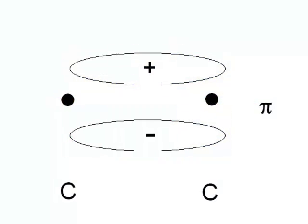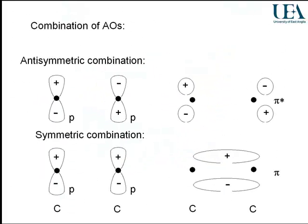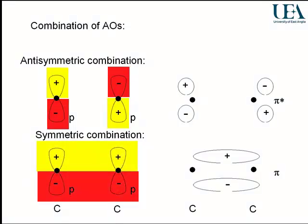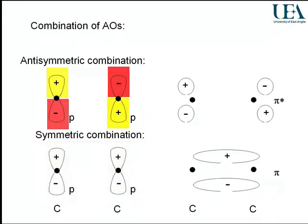To complete the picture, we need a second combination. The anti-symmetric combination has plus at the top on the left and minus at the top on the right, and the reverse in the lower lobes of these orbitals. That anti-symmetric combination of two orbitals is now the opposite of the first combination, and that produces pi star.